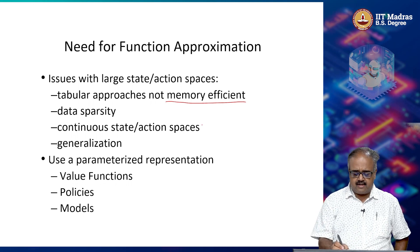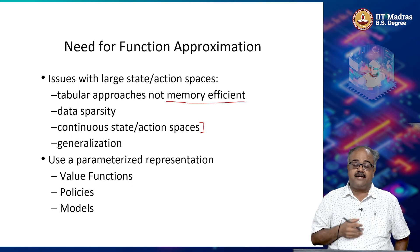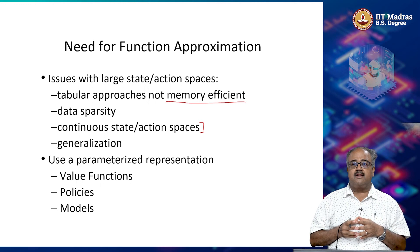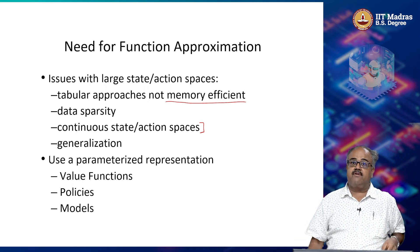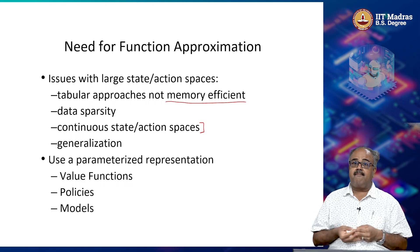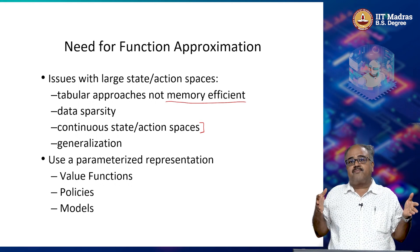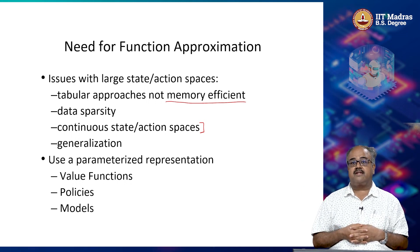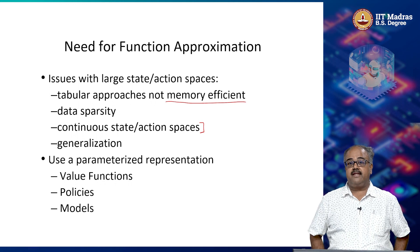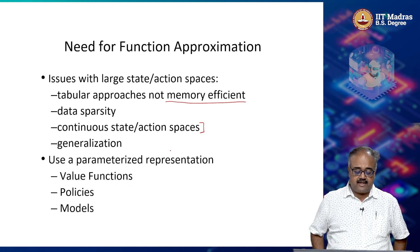The second part is about continuous states and action spaces. You cannot even define a table unless you discretize the continuous states and continuous actions into bins. We already looked at a two-dimensional workspace which we discretized into grids and did our grid world. But there are other things like the cart pole problem where the space is continuous and classical control would solve it treating state variables as continuous variables. We would like RL to do the same. In such cases, we will have to come up with a different mechanism for storing the state value function and the action value function.